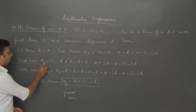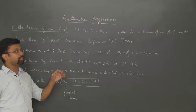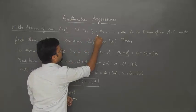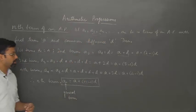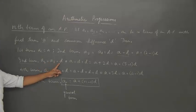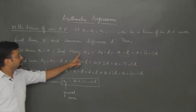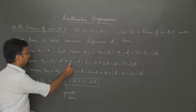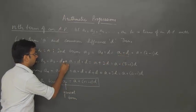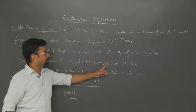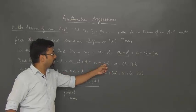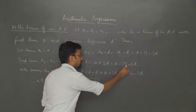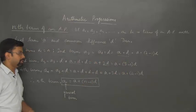The third term a3 will be equal to a2 plus d, because the third term equals the second term plus the common difference d. Since a2 is a plus d, we write a3 as a plus d plus another d, giving us a plus 2d. This can be written as a plus (3 minus 1) times d, since 2d equals (2 minus 1) times d... that is (3-1)d.